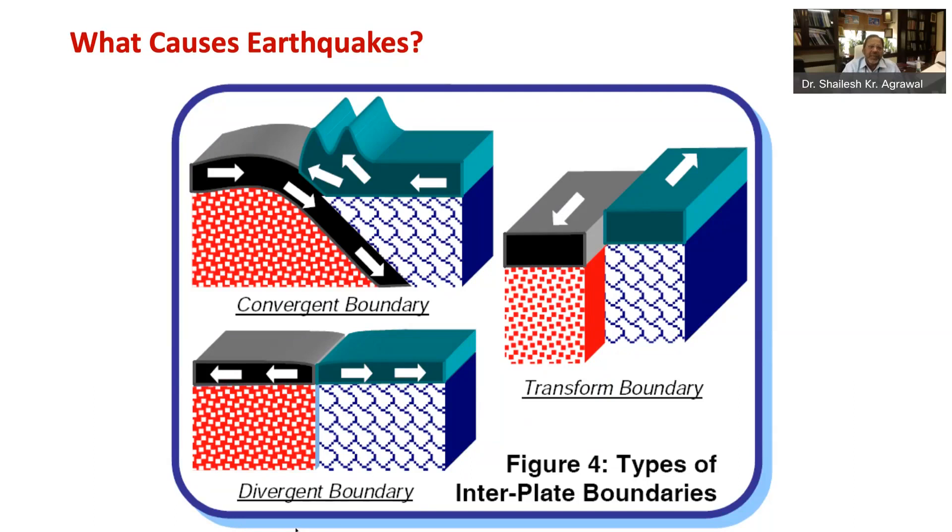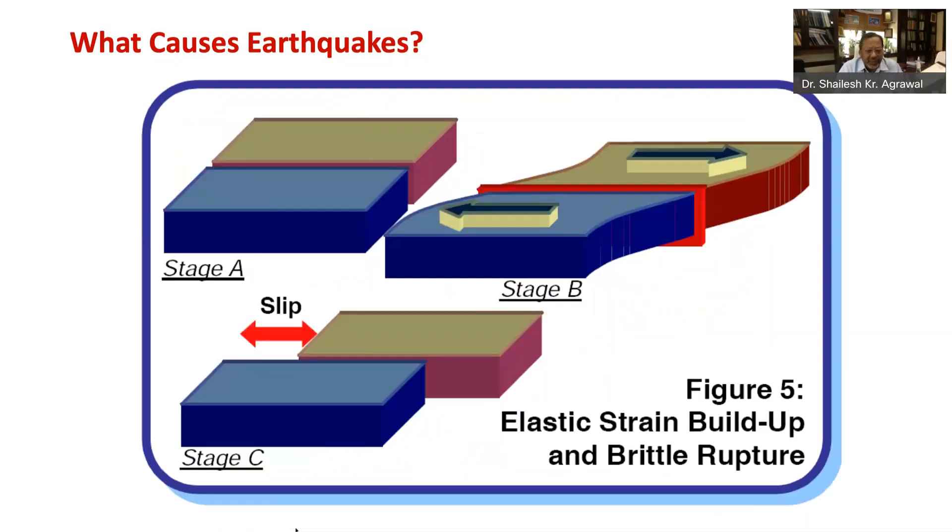Now, let's see how earthquakes generate. These rocks or tectonic plates are made of elastic material. And so elastic energy, strain energy, is stored in them during the movement of these tectonic plates. This elastic energy keeps building up until the rock along the weak region in the earth crust reaches their strength.